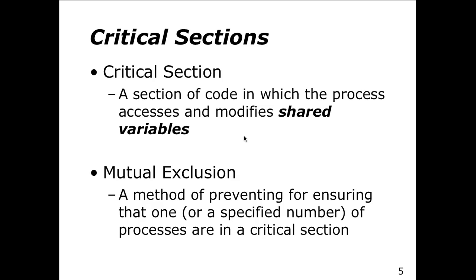A race condition might create a situation where the consumer is trying to consume something that hasn't been produced yet, or the producer is filling the buffer and the consumer doesn't get a chance to consume. We call the region of code where we have shared variables the critical section, also sometimes referred to as the critical region.